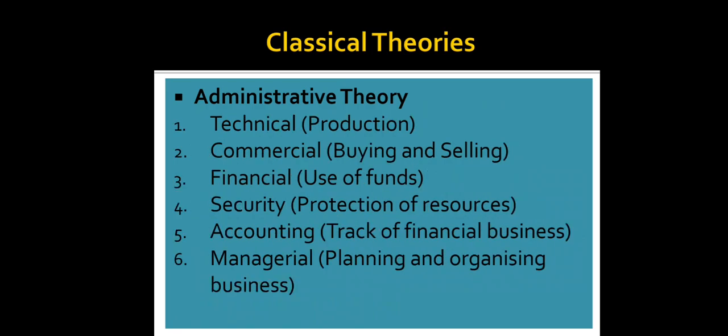The six major activities are: first, technical, which we call production activity; second, commercial, which involves buying and selling; third, financial, that is the use of funds; fourth, security, which is the protection of resources; fifth, accounting, where we keep track of all financial transactions and accounts; and sixth, managerial, that is planning and organizing the business. These are the six major activities Fayol described within business operations.